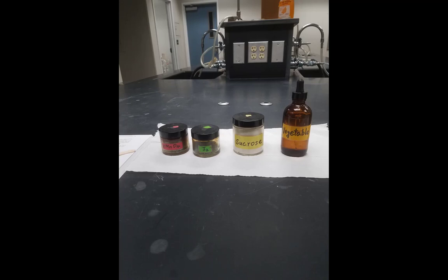Here we see the four different substances whose polarity we are going to evaluate. They are potassium permanganate, iodine, sucrose, which is table sugar, and vegetable oil.